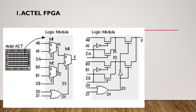In ACT-1 FPGA, the chip is based on the channeled gate array. The horizontal lines have many number of logic modules, but in between two horizontal lines there is a white space which is nothing but the channel. This channel is used to make the connection between the two logic modules. Each module has three multiplexers inside the logic module.